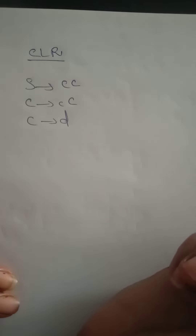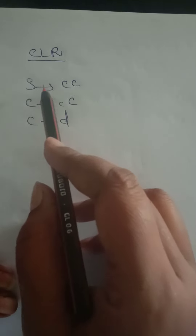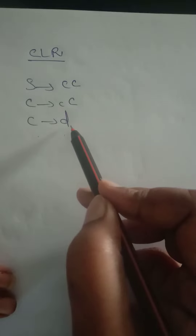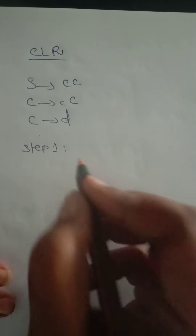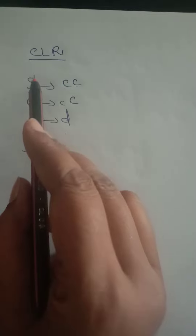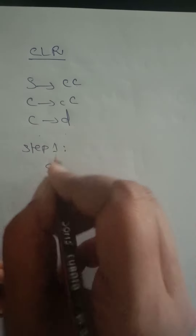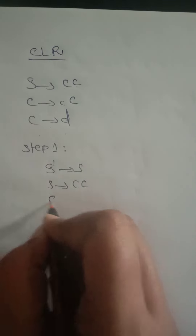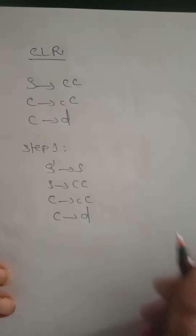In this video, I will show how to construct a CLR parsing table. The context-free grammar has three productions: S → CC, where C is a non-terminal; C → cC; and C → d. This is the given grammar for which we have to construct the CLR parser table.